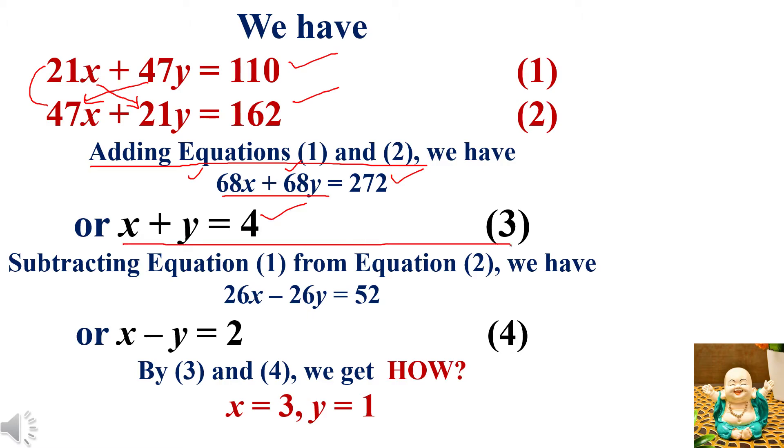Now subtracting equation number 1 from equation number 2. So 47x minus 21x is 26x, and 21y minus 47y, since negative is more than positive, it is minus 26y. 162 minus 110 is 52. Take common 26 and divide by 26 on both sides. We get x minus y equals 2, equation number 4.